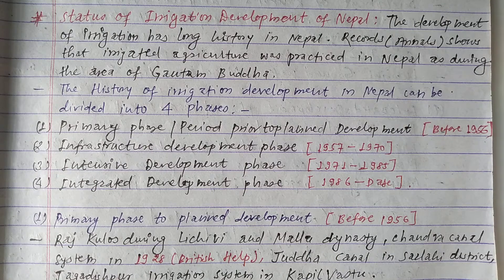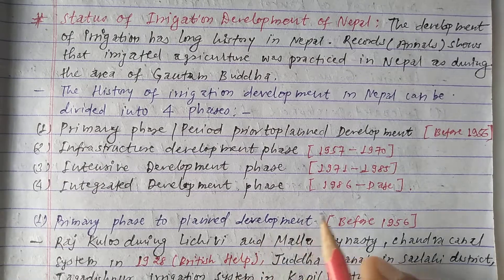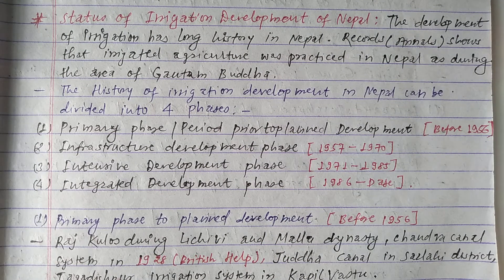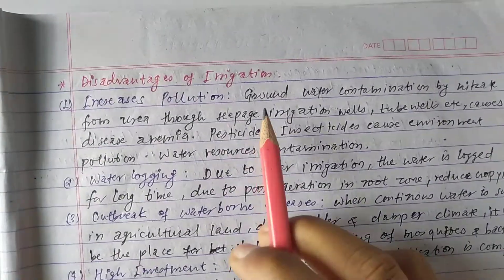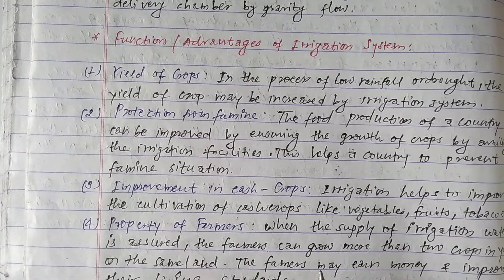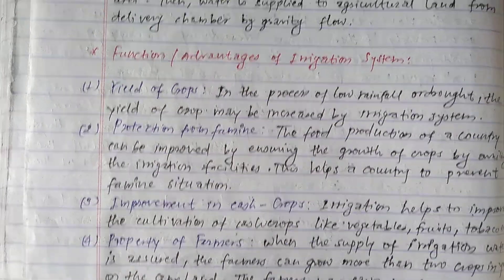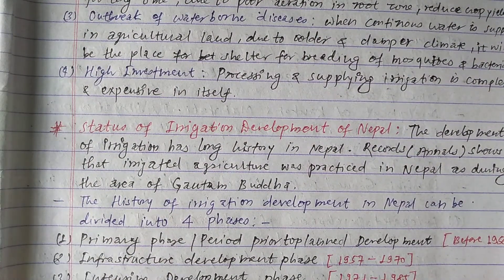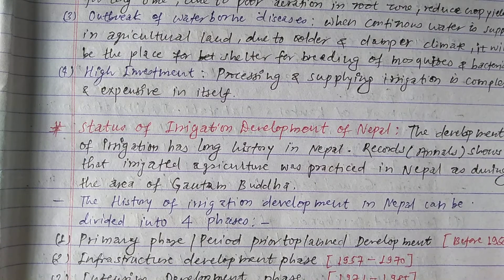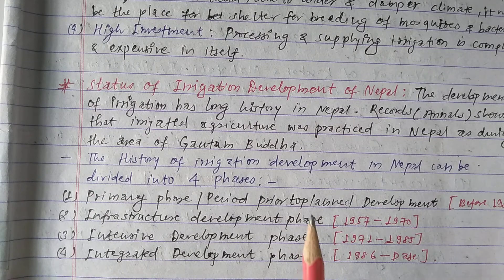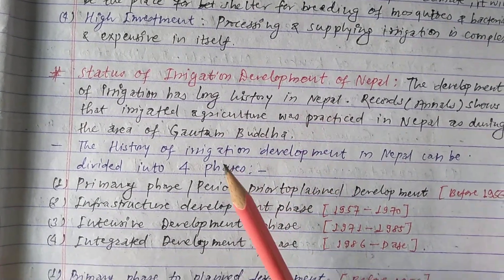Hello everyone. In this video we will study about the status of irrigation development of Nepal — you can simply call it the history of irrigation development in Nepal. This is very important for our final examination and is repeatedly asked in different exams, so you must watch this video. Before this, we already discussed disadvantages of irrigation, different types of irrigation, functions of irrigation, and advantages of irrigation.